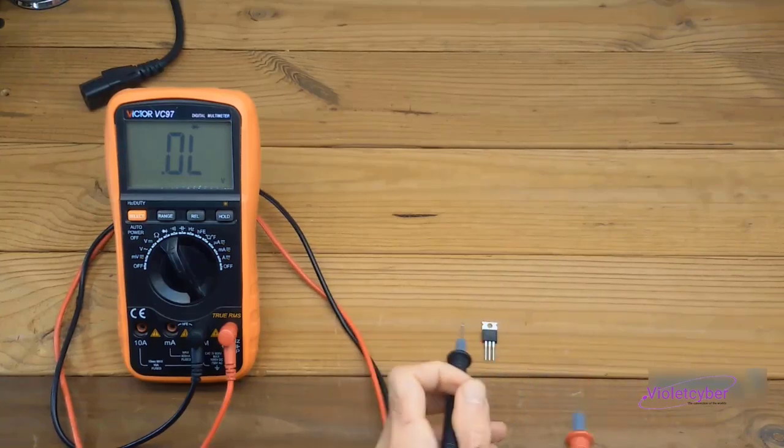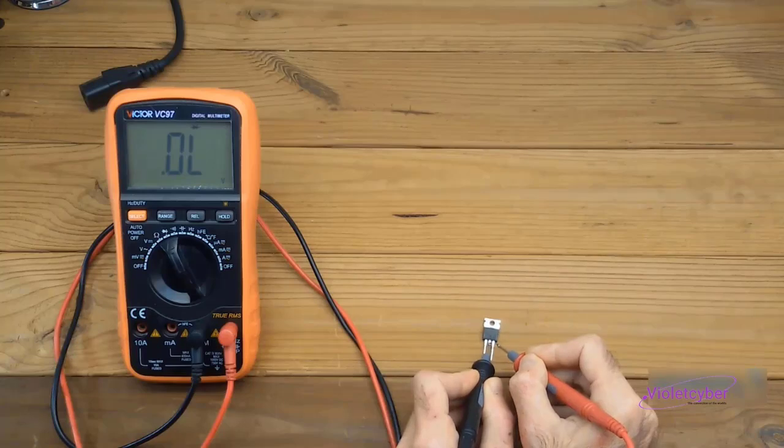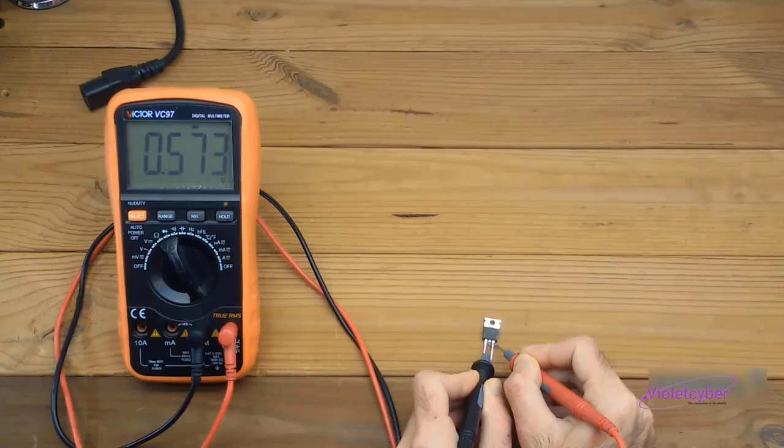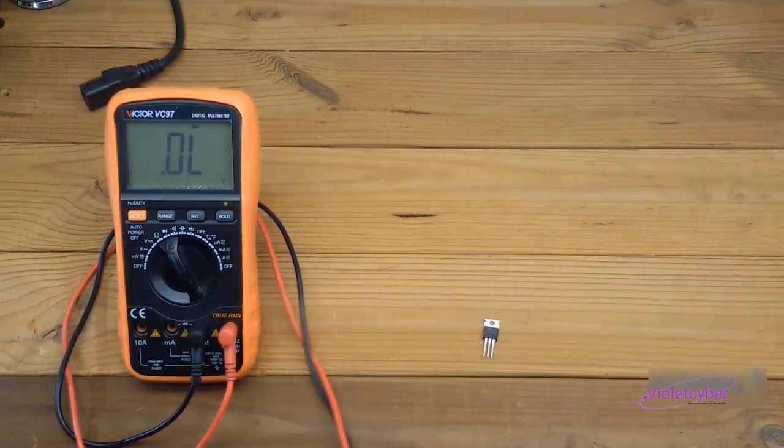This time, I reverse the probes, placing the black probe on the drain and the red probe on the source. If the MOSFET is working properly, you should see a reading on the multimeter. And yes, we observe a reading of 573, so remember this value.